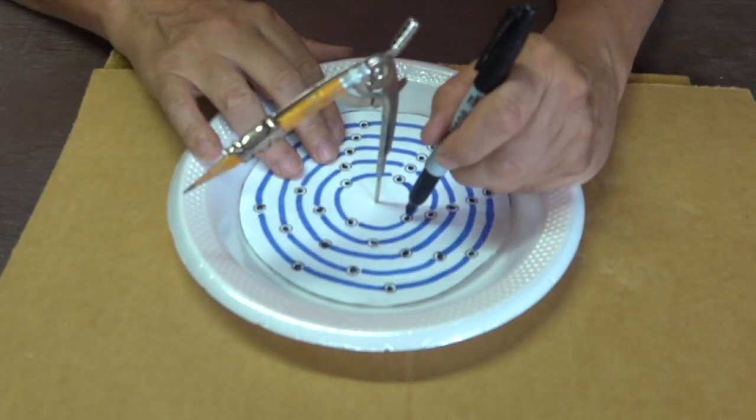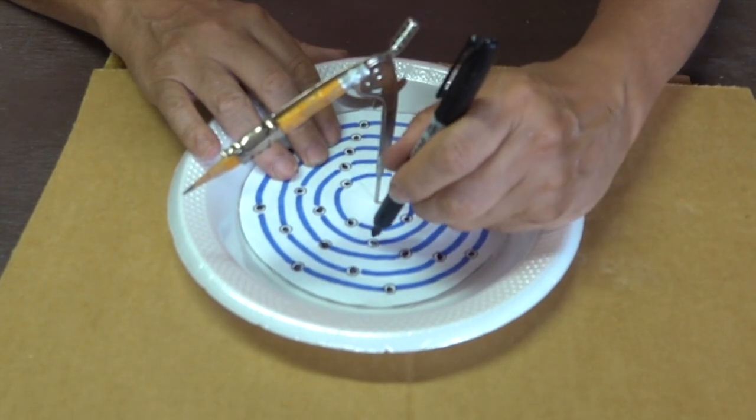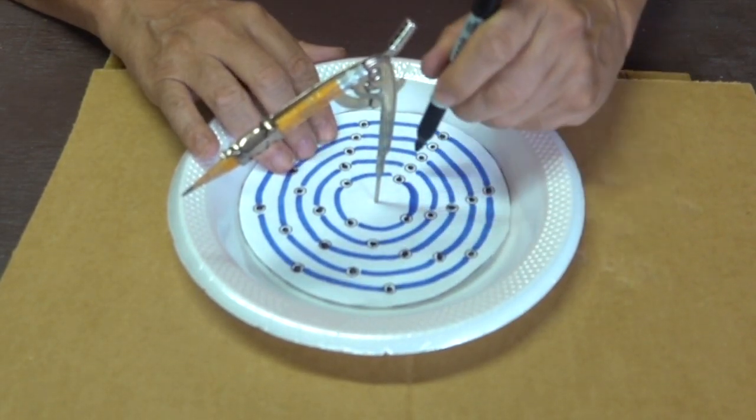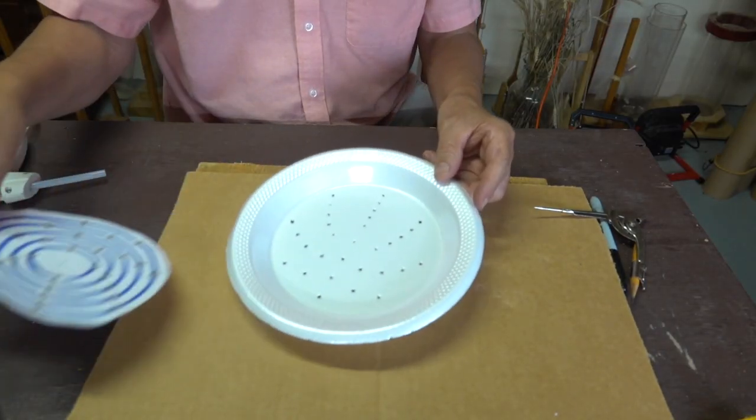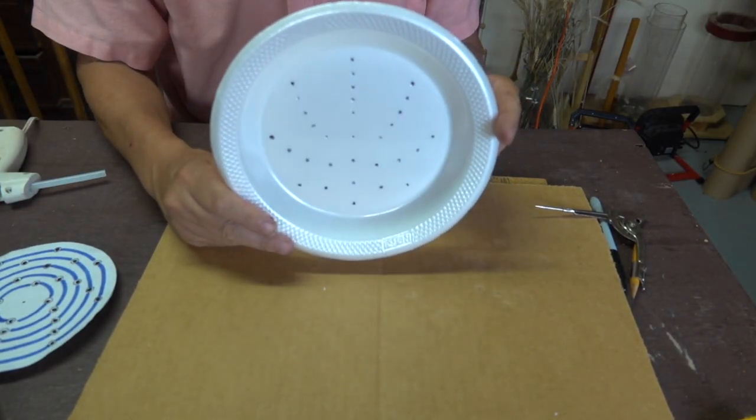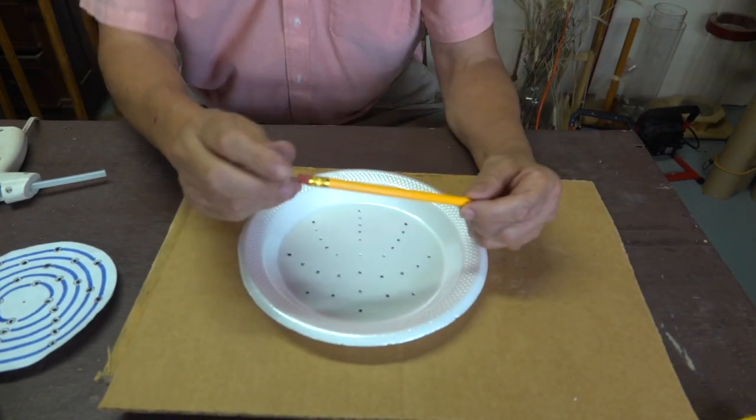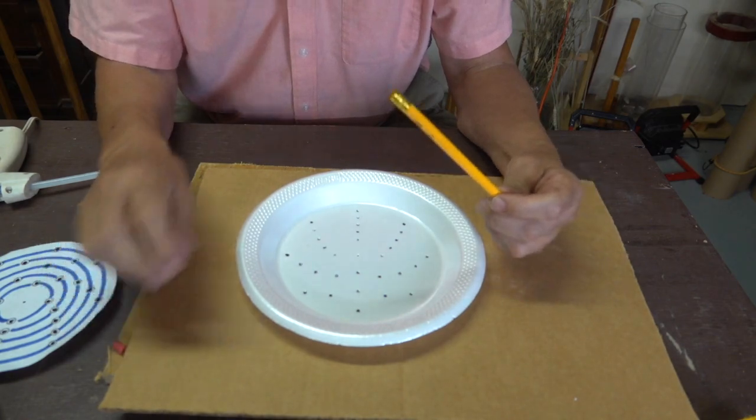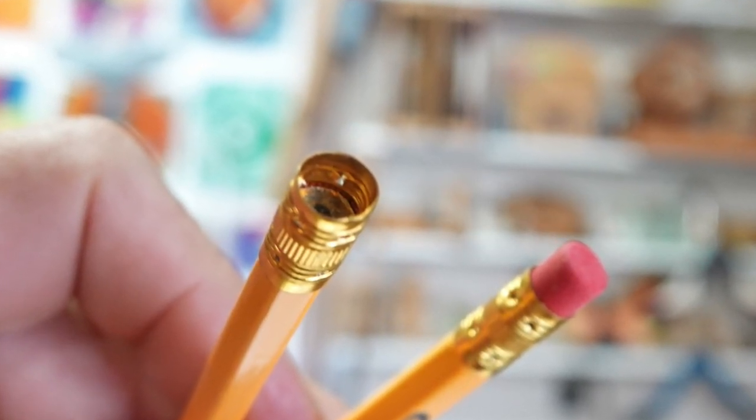I'll find its center and then I'm simply going to go through and mark where each hole should be using a sharpie. The ink is going to bleed through the paper and mark the plate underneath it. My first method of cutting the holes out is going to use this pencil. I'm simply going to take the eraser out. Next I'll use that metal band to cut through the foam.